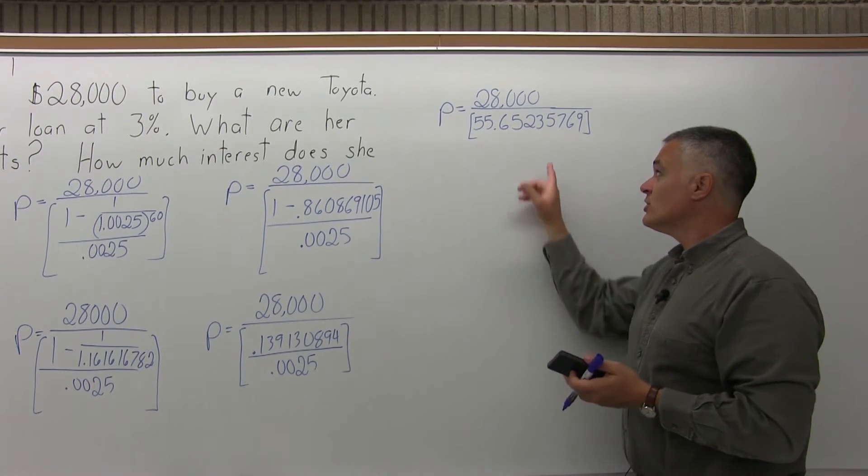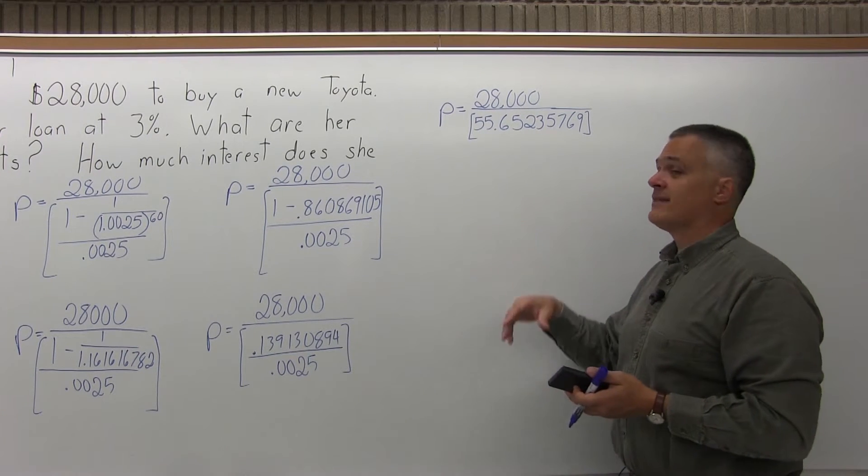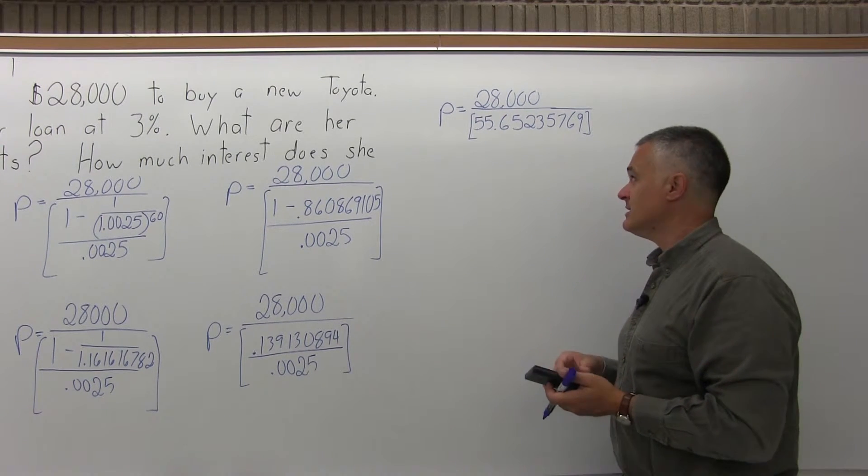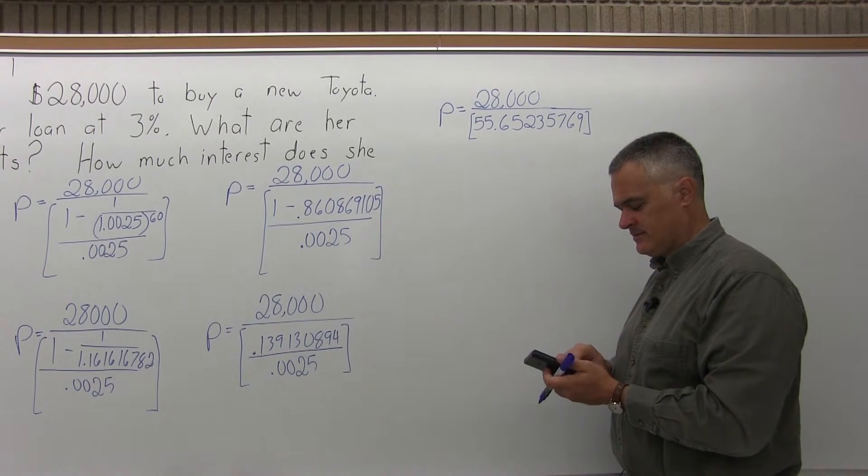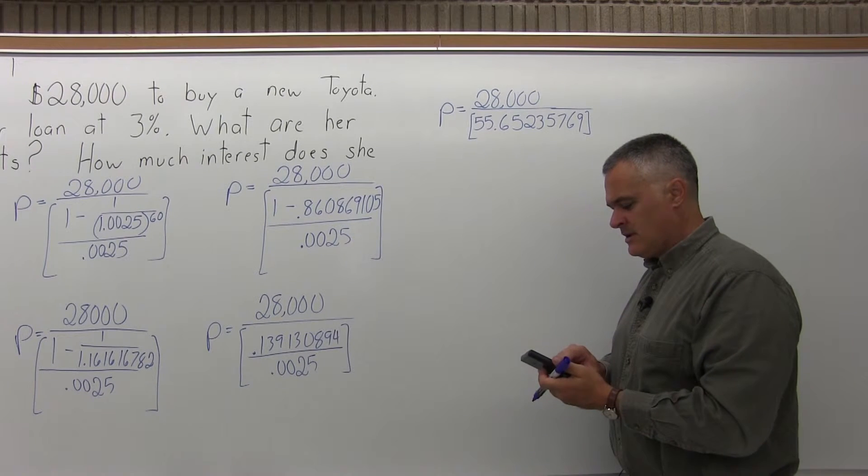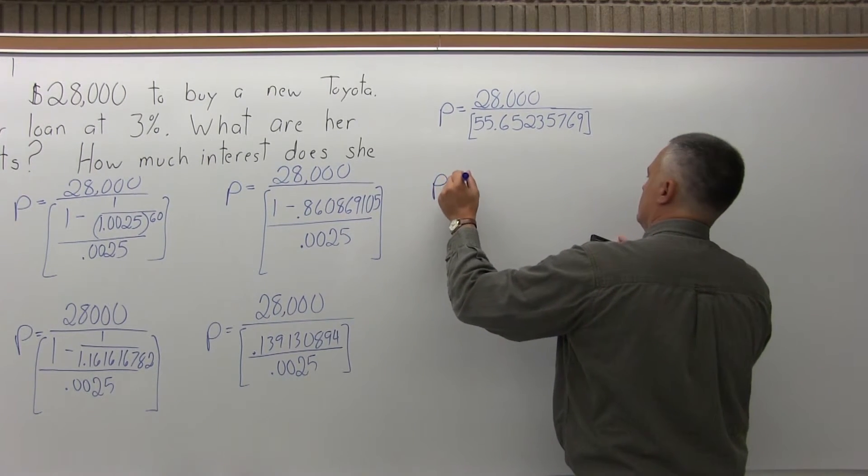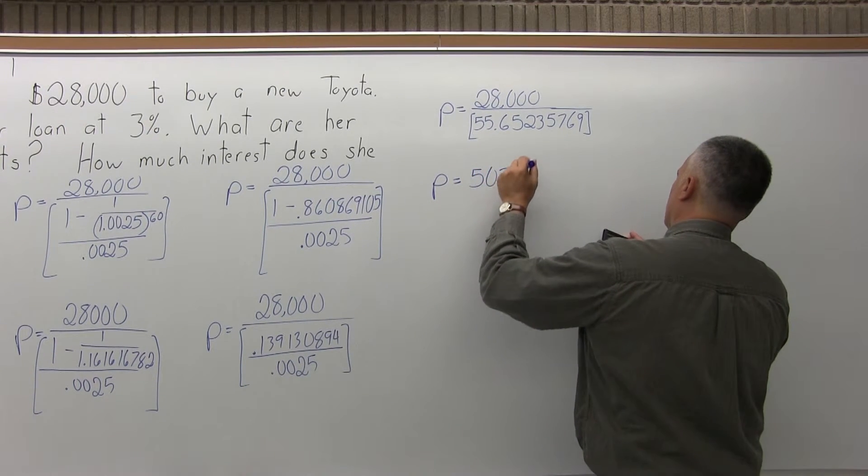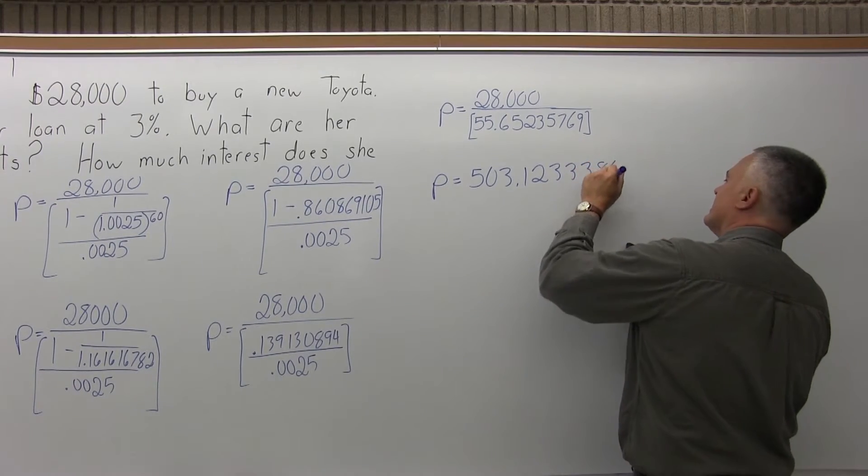And again, you can store that big denominator in the memory of your calculator. And then do 28,000 divided by recall memory. That's a little bit easier. You certainly don't have to, but it works easy enough.